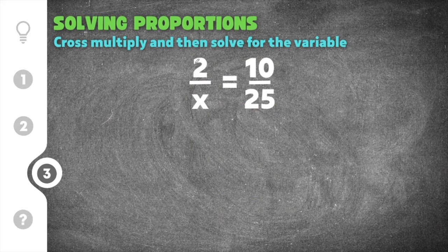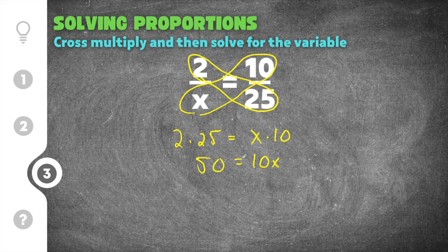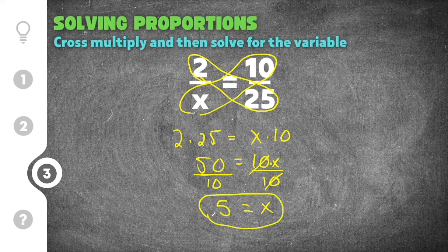Our last practice problem gives us 2 over x is equal to 10 over 25. To solve for x we first cross multiply: 2 times 25 equals x times 10. Simplifying: 50 equals 10x. To get x by itself, we divide both sides by 10. The 10s cancel on the right, giving us x by itself. 50 divided by 10 is 5. So our solution to this proportion is x equals 5.